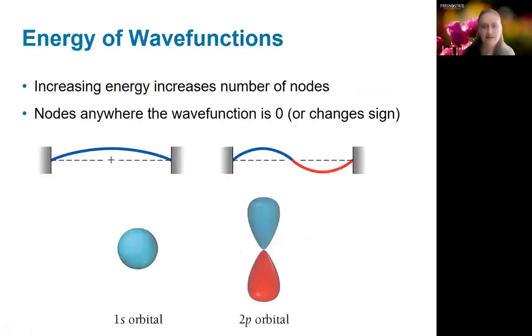Let's talk about a few key properties of wave functions. First of all, we need to know about relative energies of wave functions. So if you increase the energy, that corresponds to increasing the number of nodes in the wave function or the number of places where it becomes zero or changes sign.